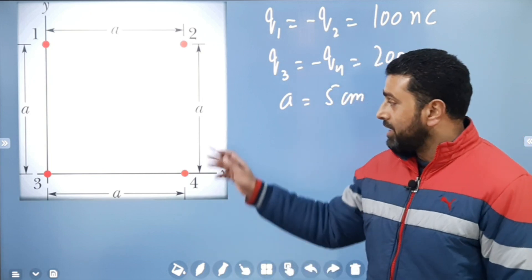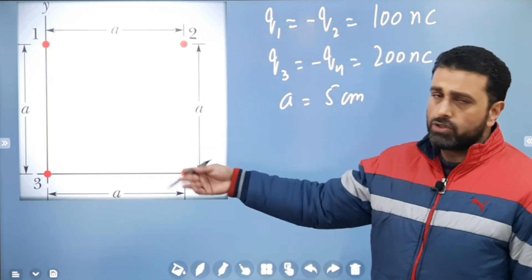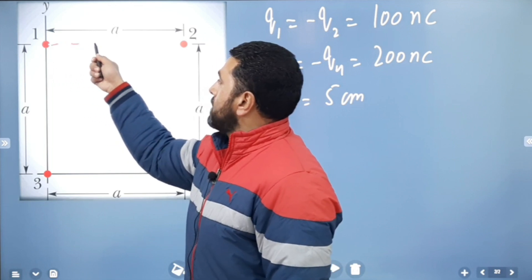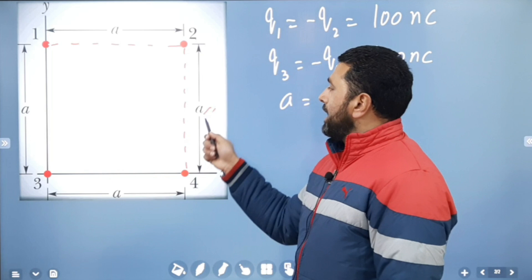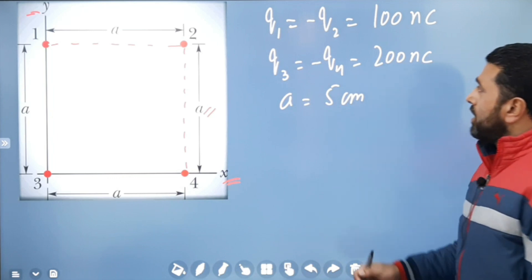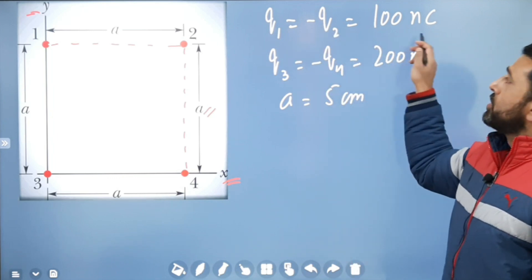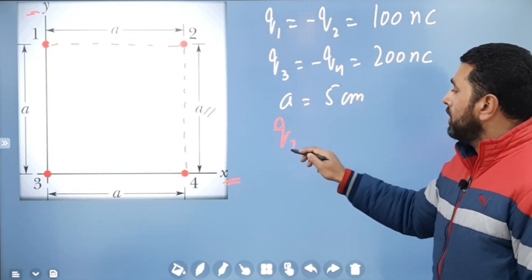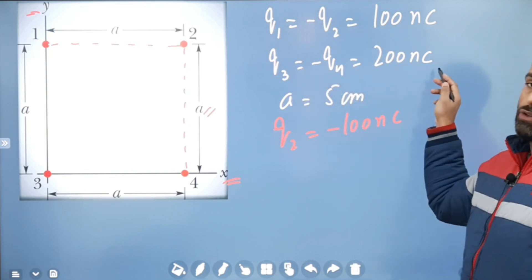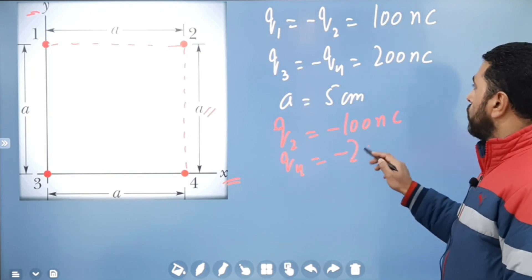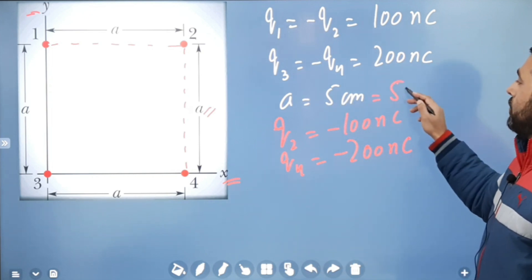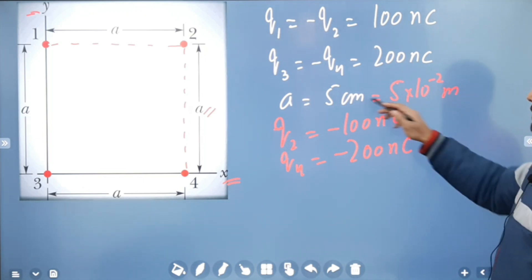This is the same diagram we used in the previous session. We have four charged particles at the corners of a square with side length A, with this being the X-axis and this the Y-axis. Charges are: Q1 equals 100 nanocoulombs, Q2 equals minus 100 nanocoulombs, Q3 equals 200 nanocoulombs, Q4 equals minus 200 nanocoulombs, and A equals 5 centimeters, which is 5 times 10 to the power minus 2 meters.